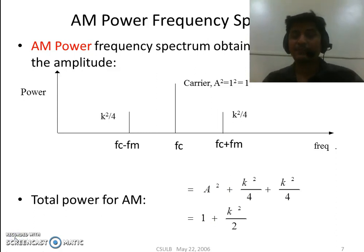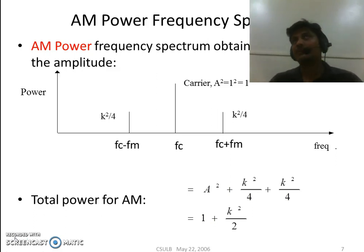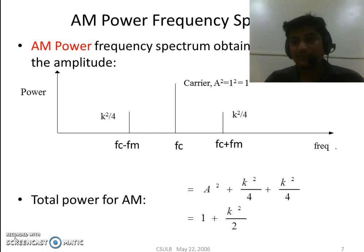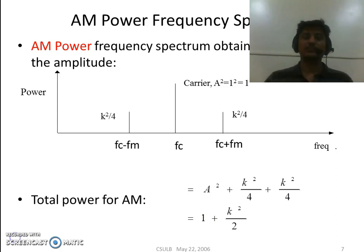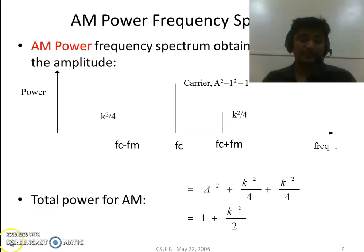Now we will implement these Amplitude Modulation equations in LabVIEW software and observe the modulated signal, and observe how the amplitude of the carrier is varied according to the message signal. We will also change the carrier to a square wave and observe the output waveform pattern, and observe the upper and lower sideband frequencies and their magnitudes in LabVIEW.